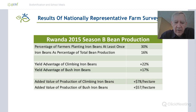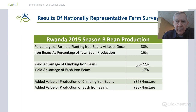The beans aren't higher-yielding because they're biofortified — they're higher-yielding because we're piggybacking on the best agronomic properties of modern varieties being released by agricultural research centers. We're aggressively promoting these high-yielding varieties in Rwanda and other countries, and now about 20% of total bean production in Rwanda consists of high-iron beans.